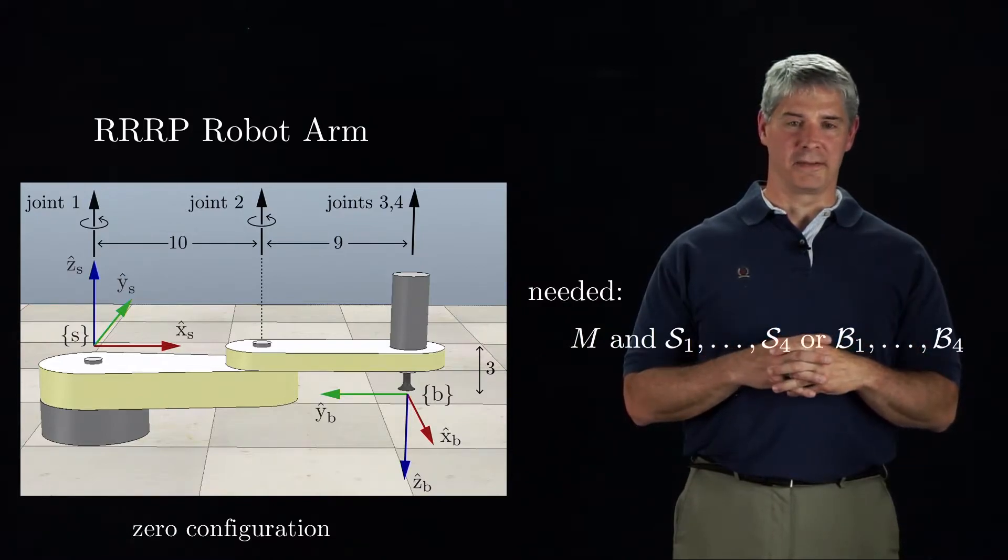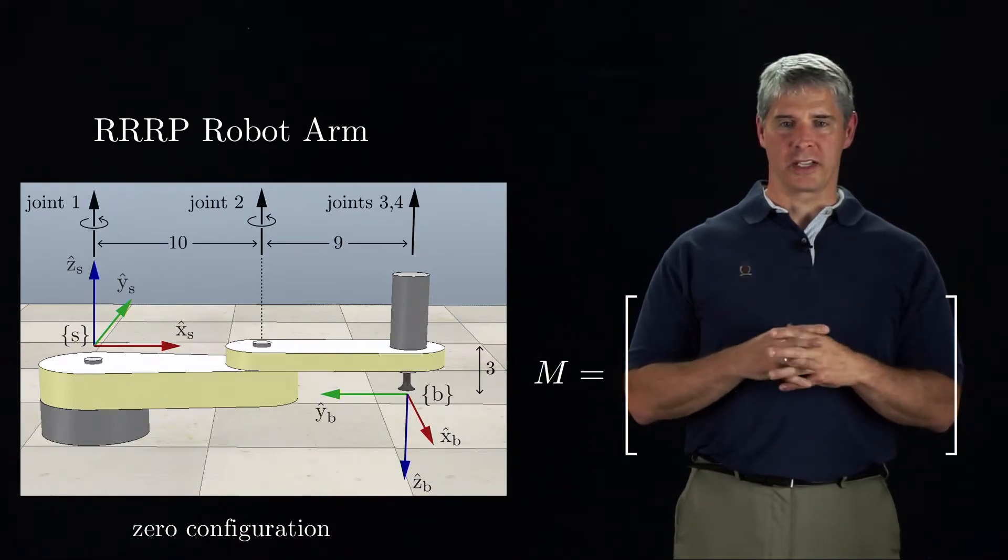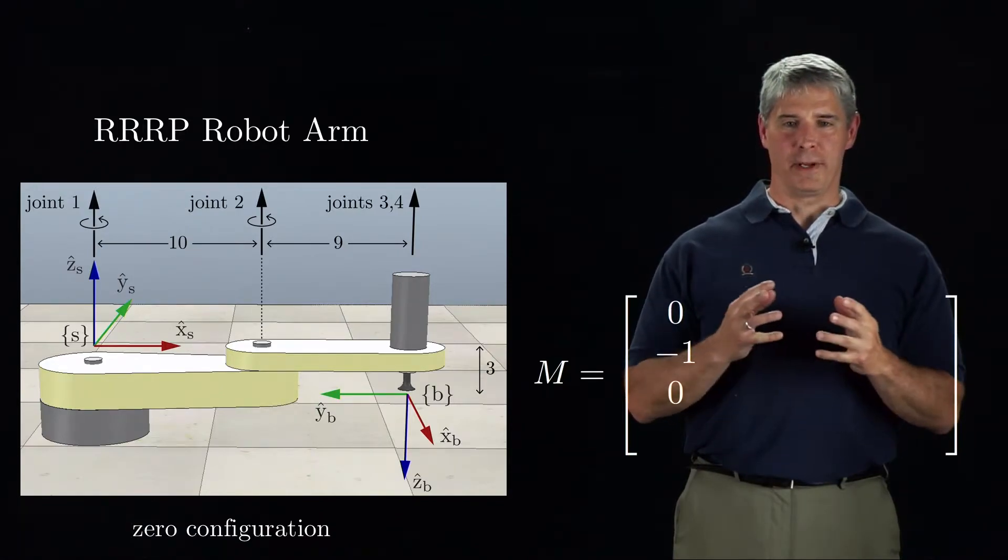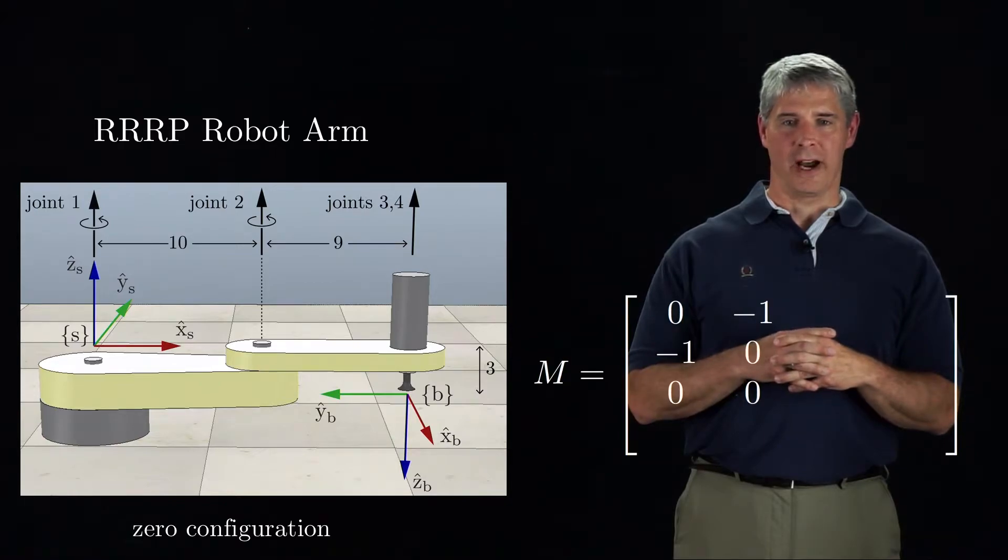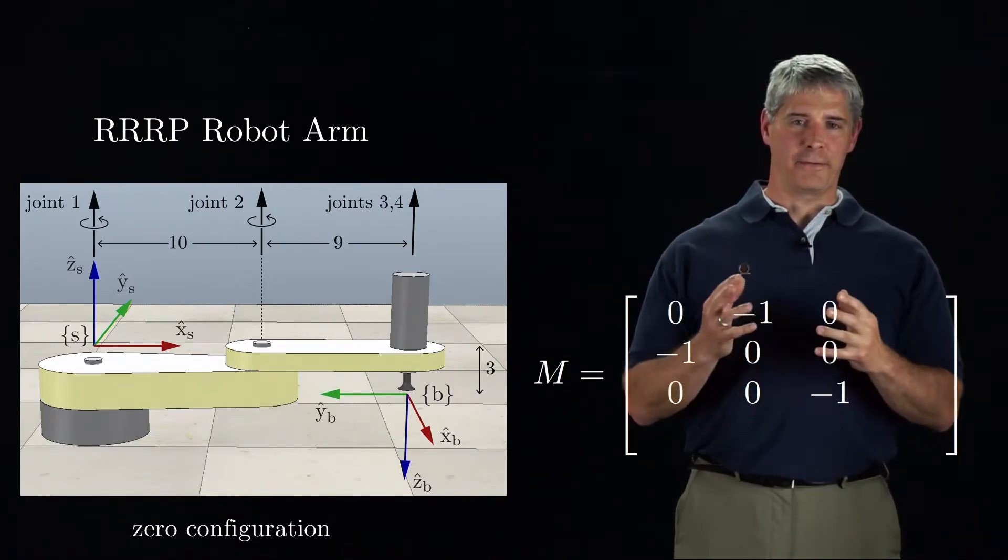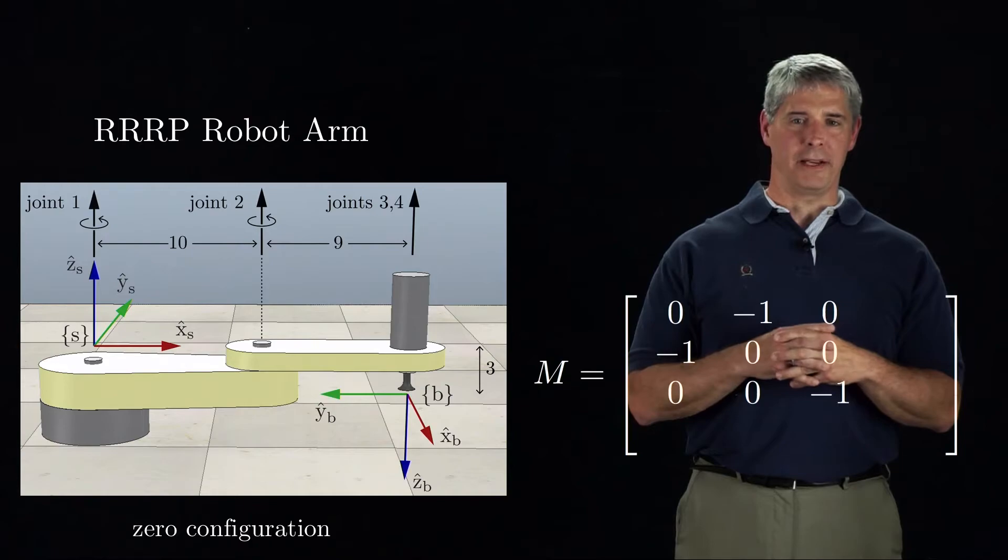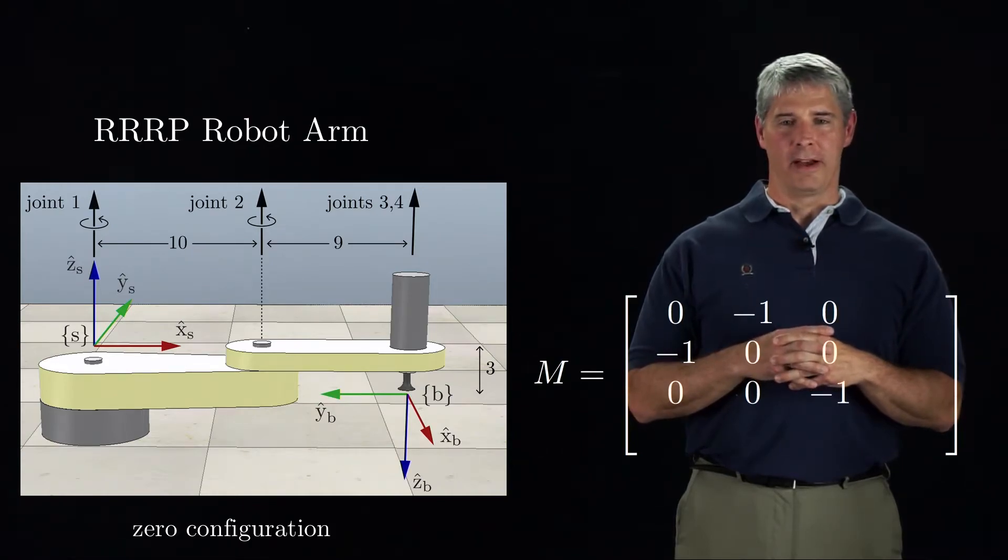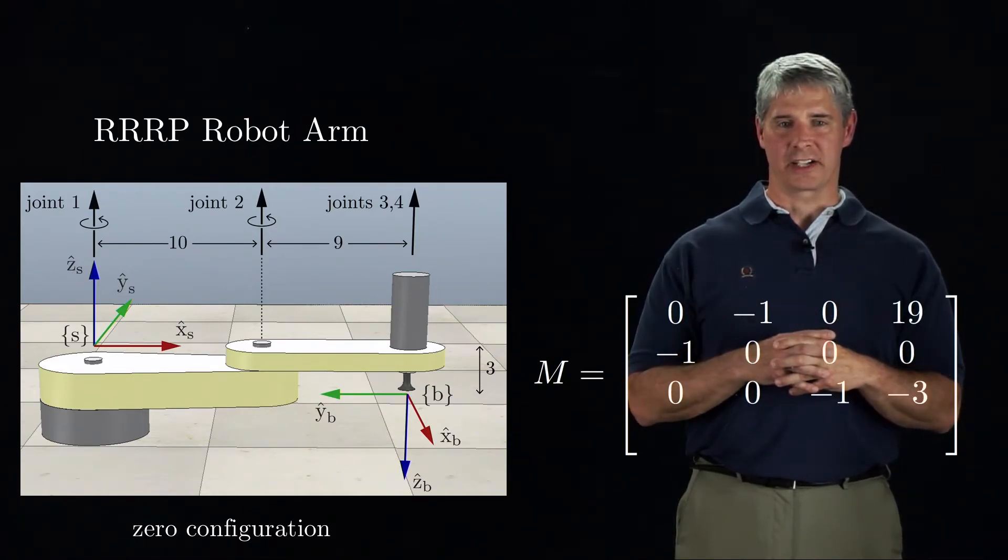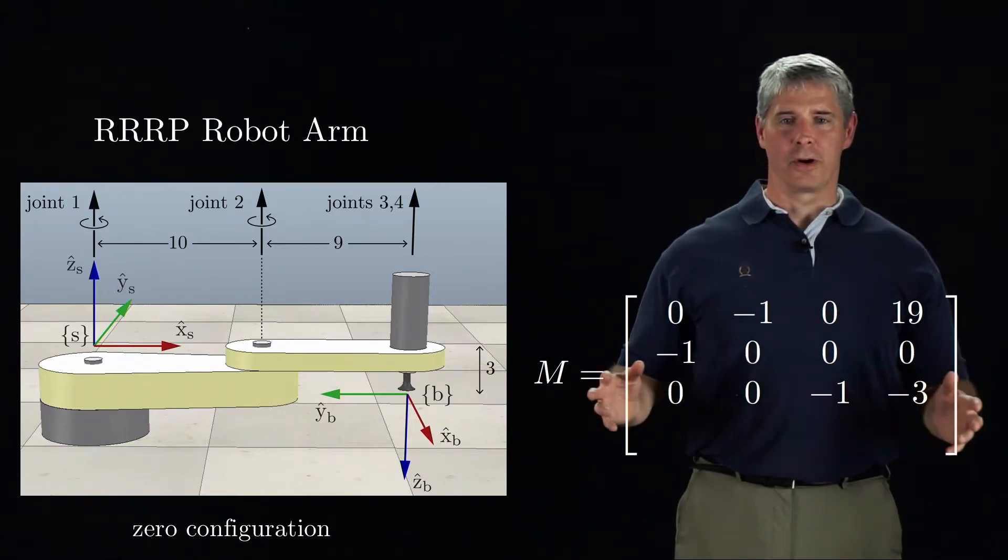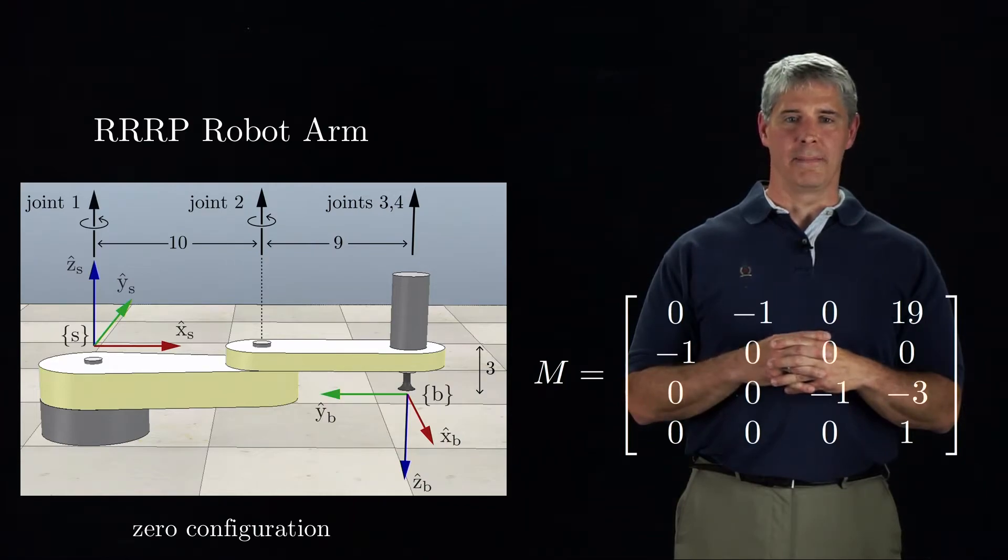First, let's focus on the orientation of M. From the picture, we can see that the B-frame x-axis is aligned with the minus y-axis of the S-frame. The B-frame y-axis is aligned with the minus x-axis of the S-frame, and the B-frame z-axis is aligned with the minus z-axis of the S-frame. Also, we can see that the B-frame is offset from the S-frame by 19 units in the x-direction and minus 3 units in the z-direction of the S-frame. We add the row of zeros and a one to complete the M-matrix.